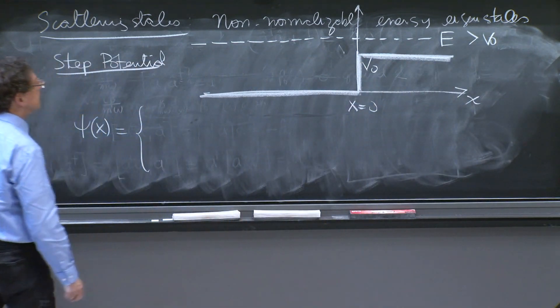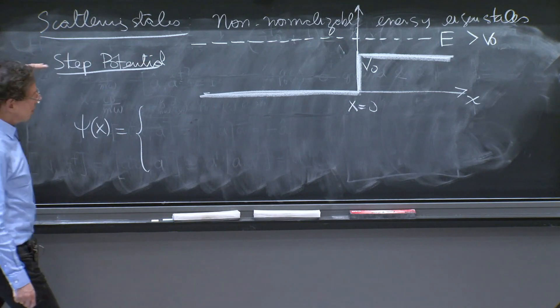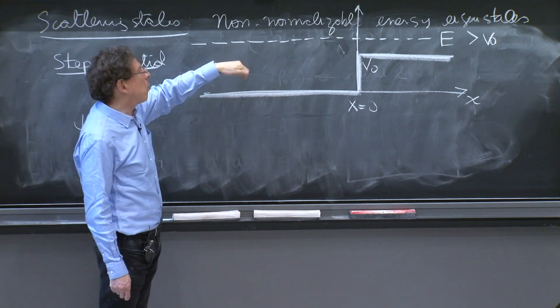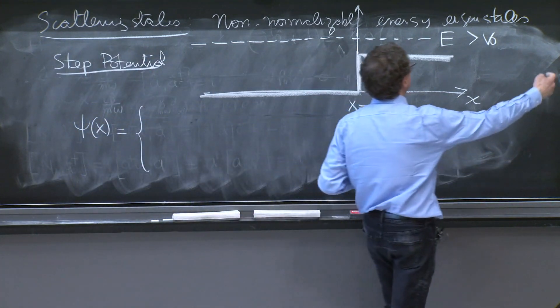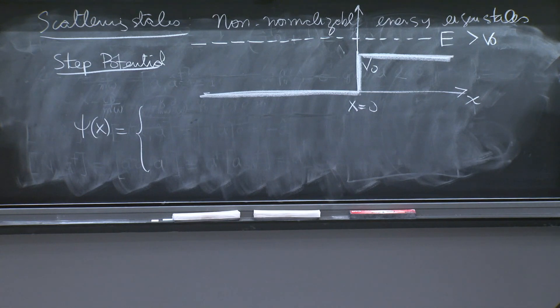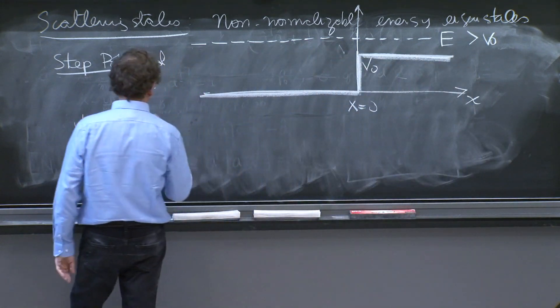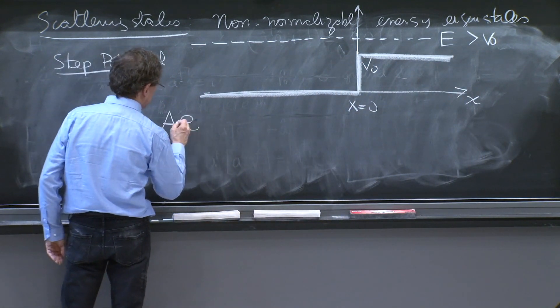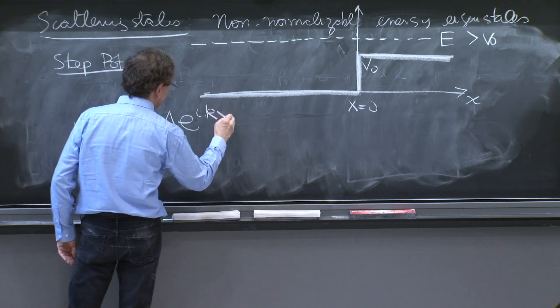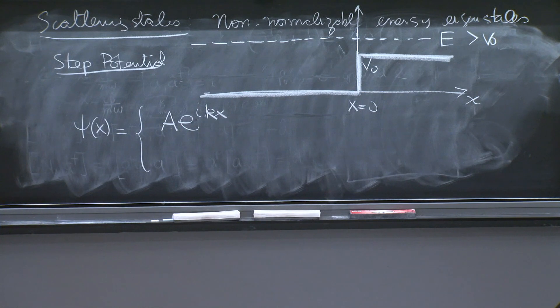or a wave that is coming from the right. So let's visualize this solution as a wave that's coming from the left. It will be a little easier. So I will write it, a e to the i k x. OK, why is it coming from the left?